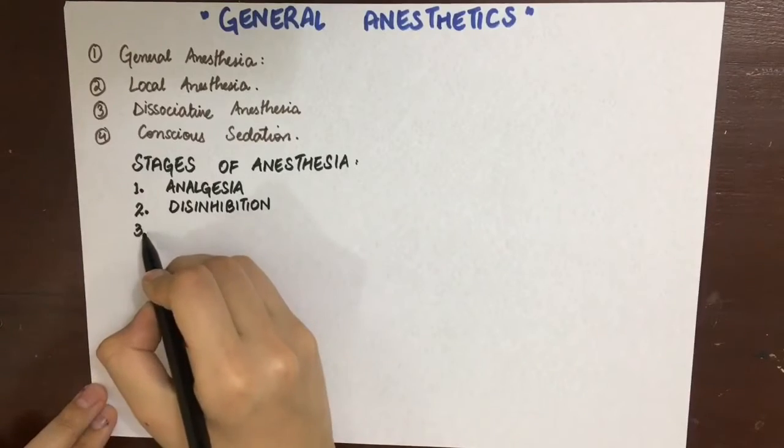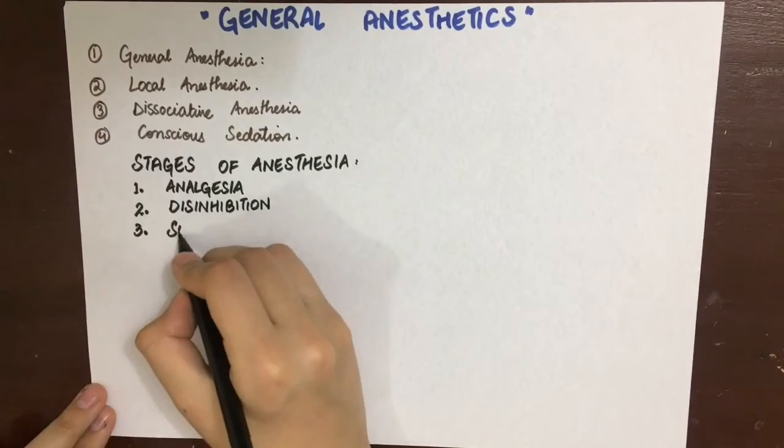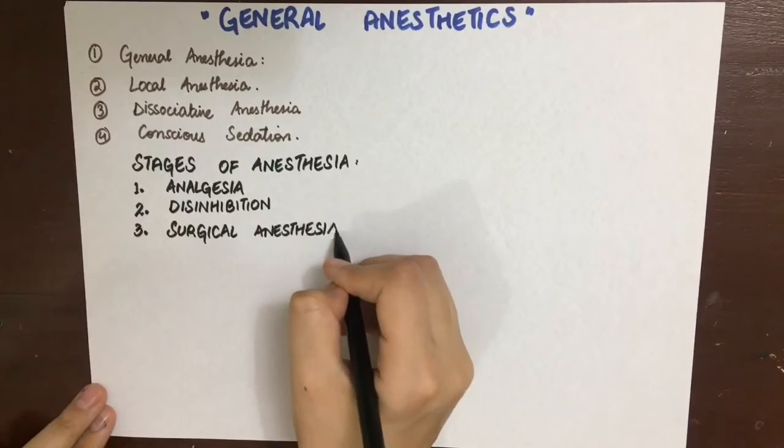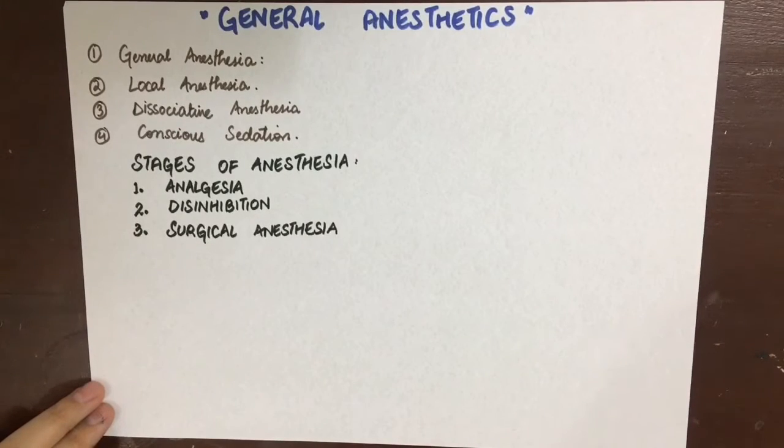The next stage is that of surgical anesthesia. The patient is completely unconscious. There is no pain reflex. Respiration becomes regular. Muscles relax. Reflexes are lost. Intercostal muscles are completely paralyzed, and the BP and all the vitals, respiration, etc. should be maintained in this stage.